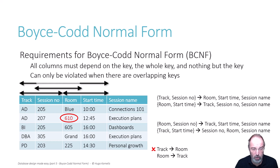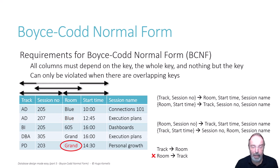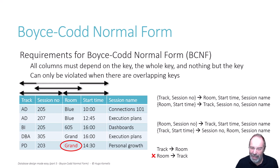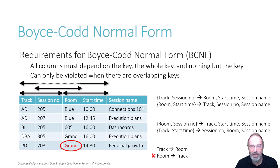We want our database to prevent these violations, and this design doesn't. That's why we should change it to BCNF. Similarly, we can also easily violate the business rule that room determines track by, for instance, reassigning session PD 203 to the ground room. Now we have PD sessions and DBA sessions in the ground room, which again is not what the organizer wants. So all those problems are not prevented by the database design because we violated BCNF.